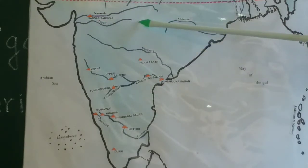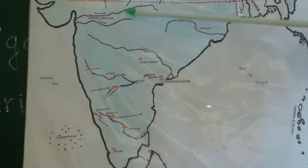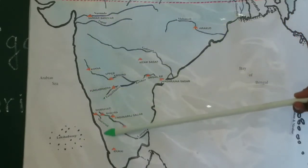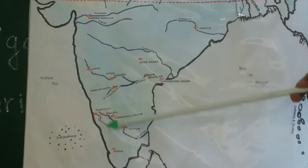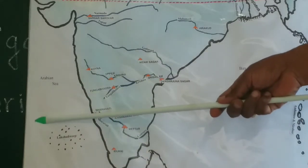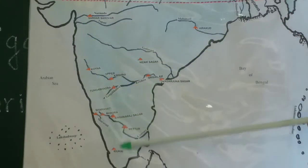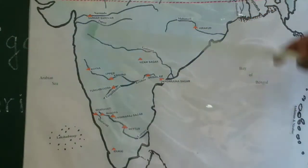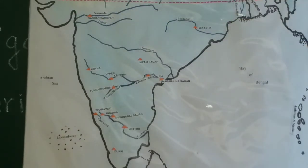Tapi takes birth in the Multai Hills. These two are chief rivers in central India. Then you have a number of rivers along the west coast, but they are all short rivers. They take birth in the Western Ghats range and join the Arabian Sea. One to picture is the Sabarmati river — the Sabarmati Ashram is on its banks.